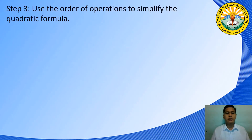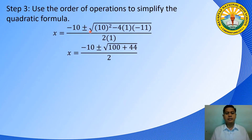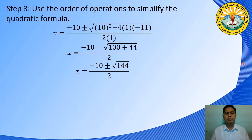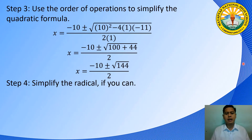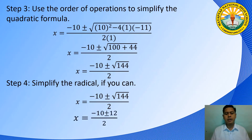Step 3: use the order of operations to simplify. The equation becomes X equals negative 10 plus or minus the square root of 100 plus 44, all over 2. Adding 100 plus 44 inside the radical gives the square root of 144. Step 4: simplify the radical. X equals negative 10 plus or minus the square root of 144 all over 2. The square root of 144 is 12, so X equals negative 10 plus or minus 12 all over 2.